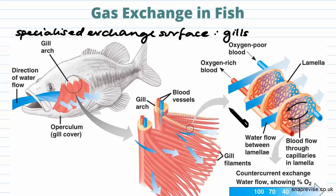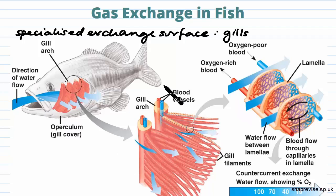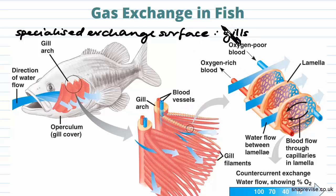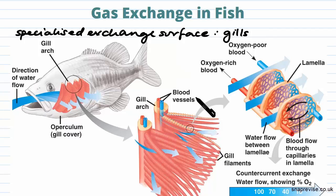It's never a good idea when you're constantly swimming around in water to simply take on that water all the time. So fish have this outer covering that is waterproof to stop their organs from just taking up water. However, this waterproof outer covering is also therefore gas tight.